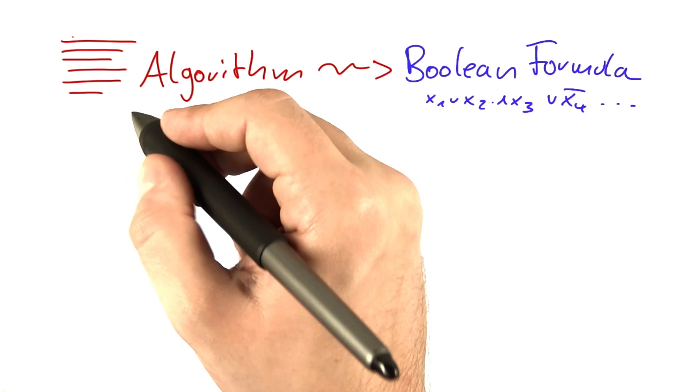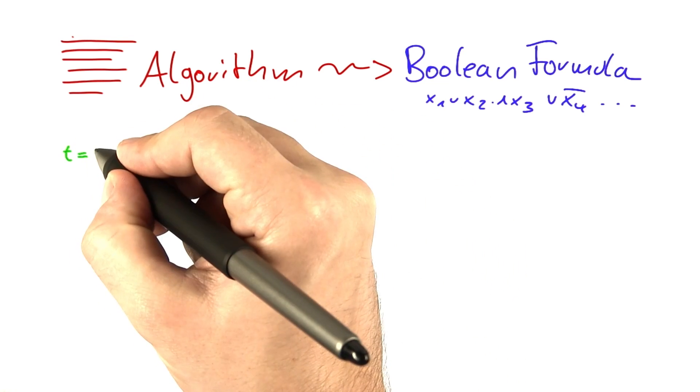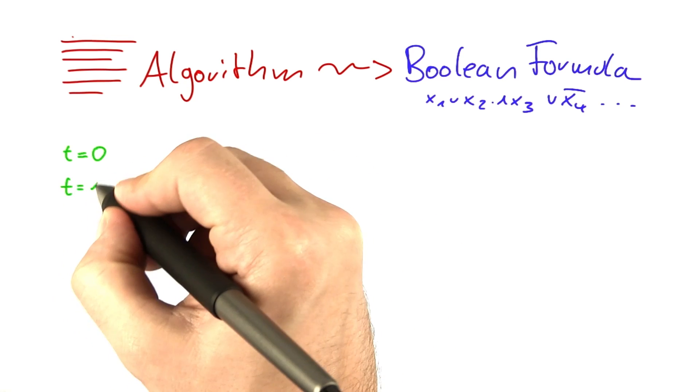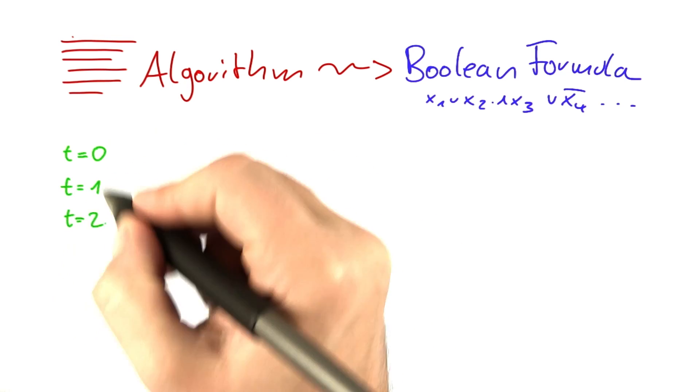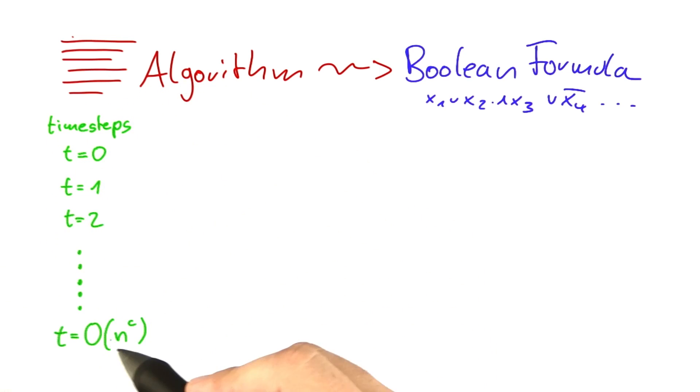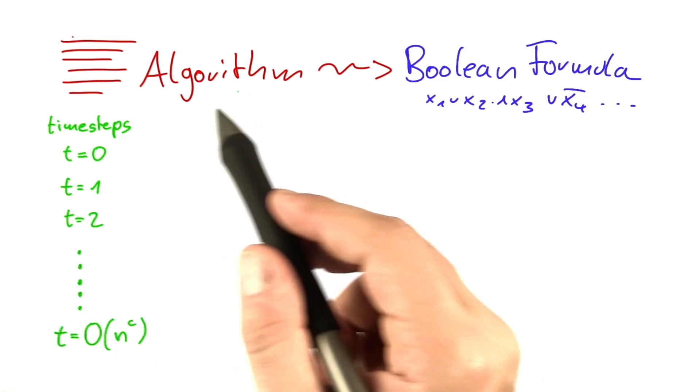So assume you have an algorithm on a non-deterministic RAM that runs in polynomial time. You have a point in time t equals zero when your algorithm starts out, then you have t equals 1, t equals 2. So those are the time steps here. And the final time step is going to be some polynomial of n. That is clear because we're looking at an algorithm that solves a problem that lies in NP.